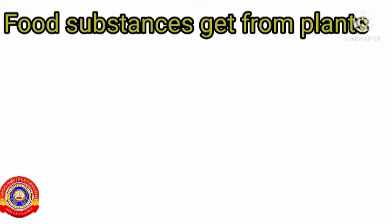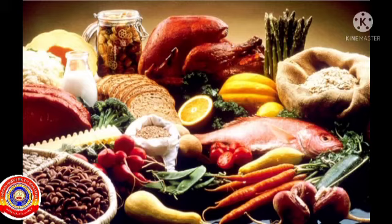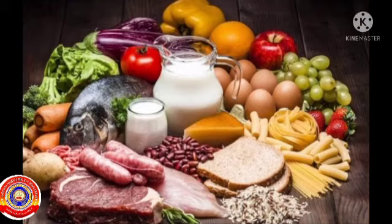And what are the food substances we get from plants? Very good — cereals or food grains, pulses, vegetables, fruits, etc. So we have to eat food items that we get from both plants and animals.